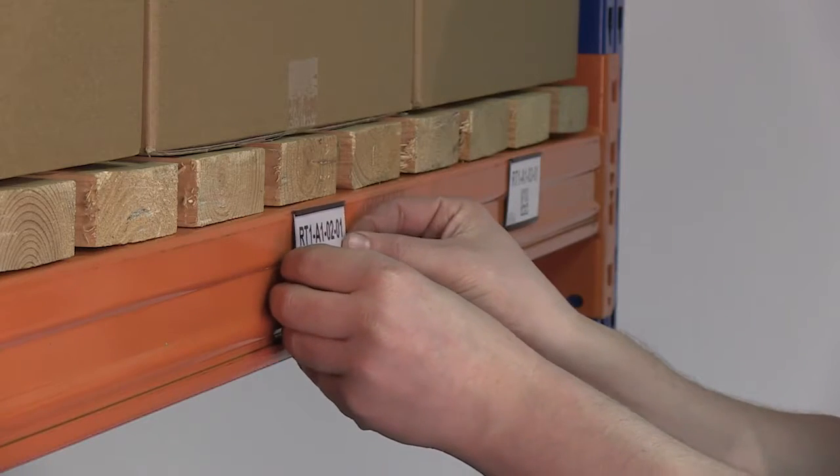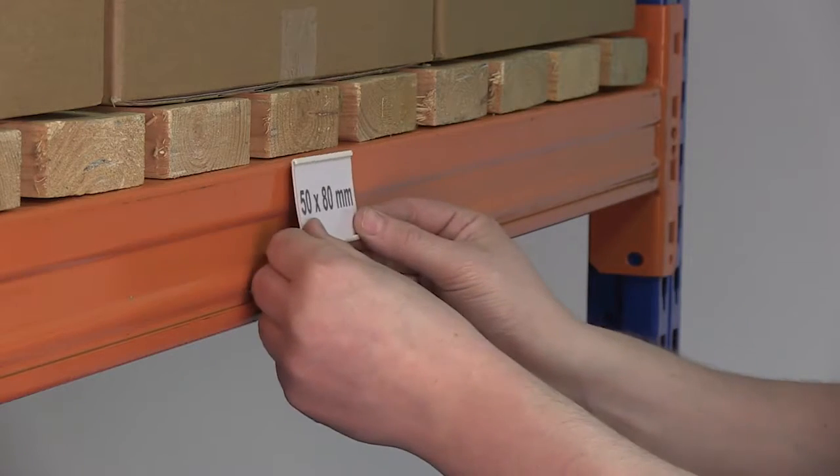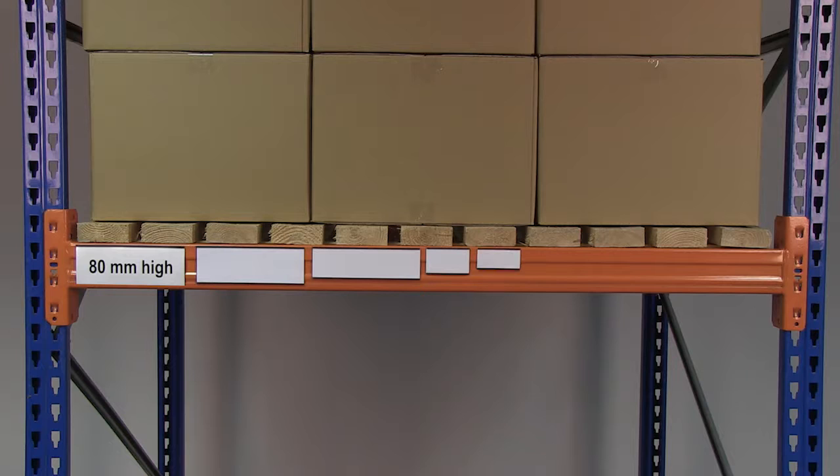Label holders are available in magnetic and self-adhesive fixings. Magnetic holders are supplied in cut sizes from stock in 10 different heights from 10mm up to 80mm high and in various widths from 80mm up to 1 meter.